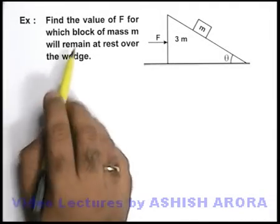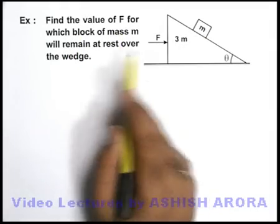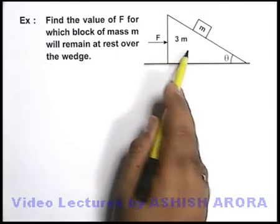In this example, we are required to find the value of F for which the block of mass small m will remain at rest over this wedge of mass 3m.